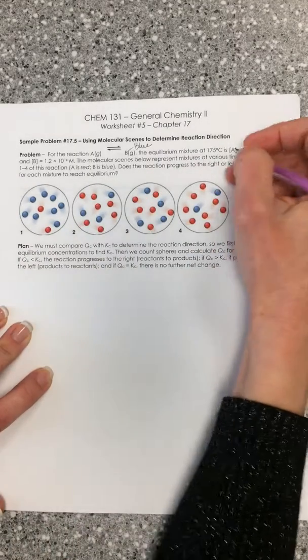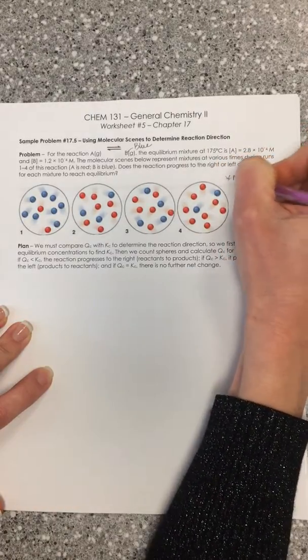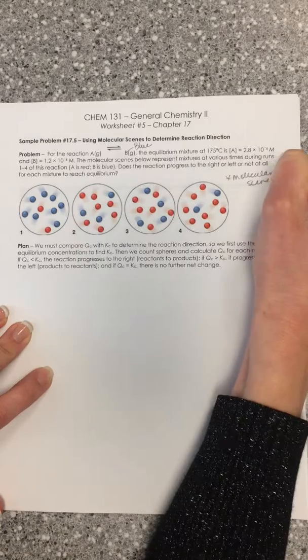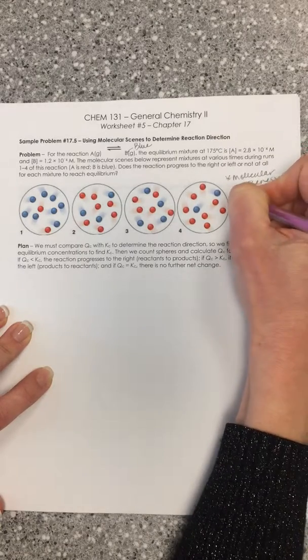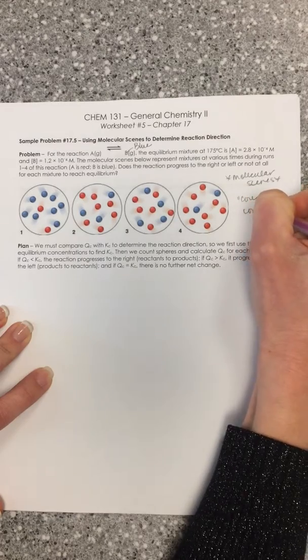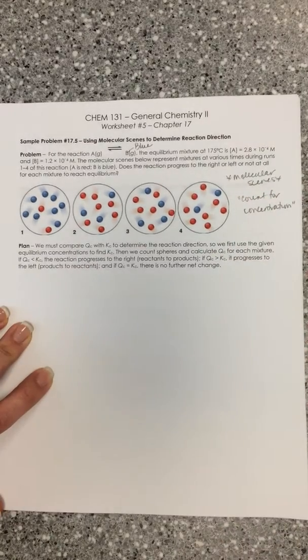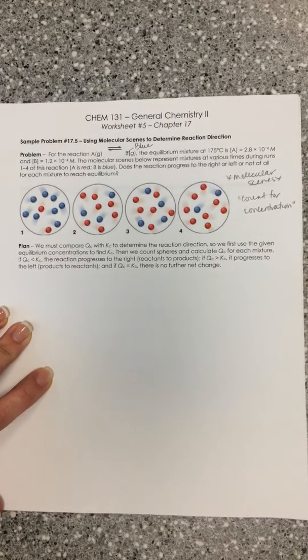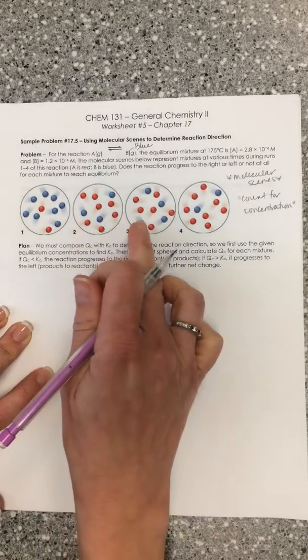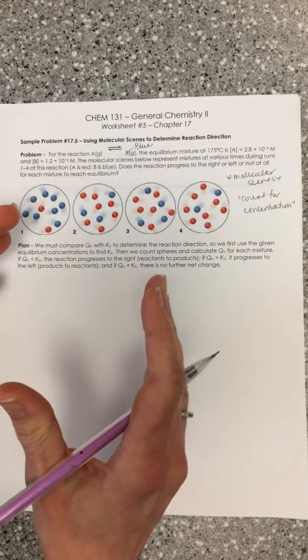So remember, anytime you see molecular scenes, what that really means is we're going to need to count for concentration. So the first thing we want to do is each of these represents snapshots of where something's at. We can think about that as Q.